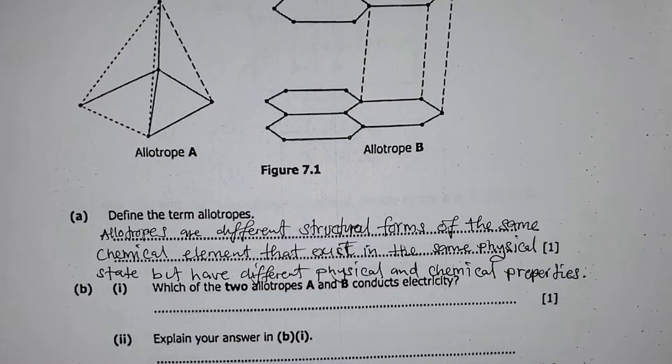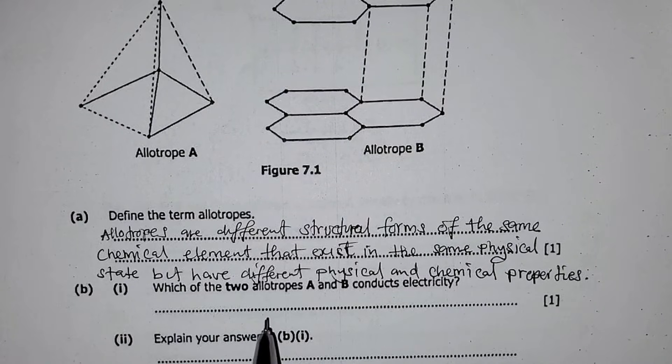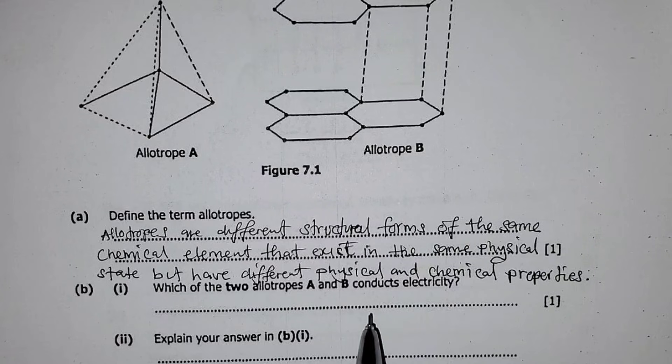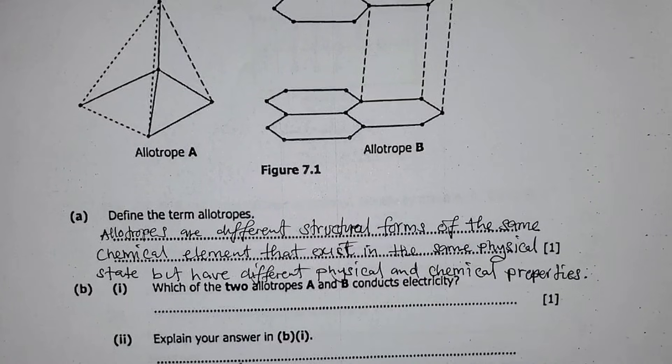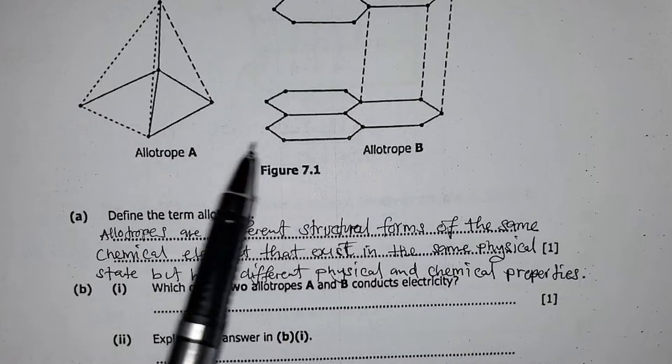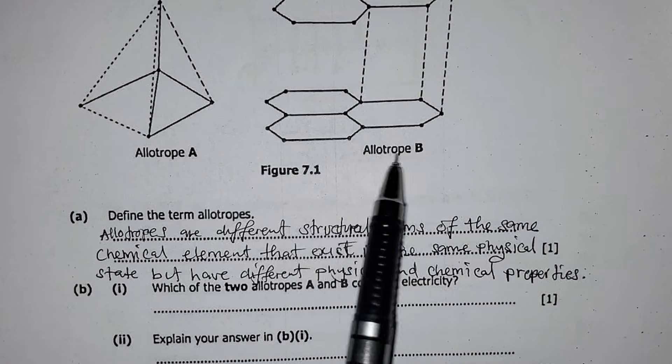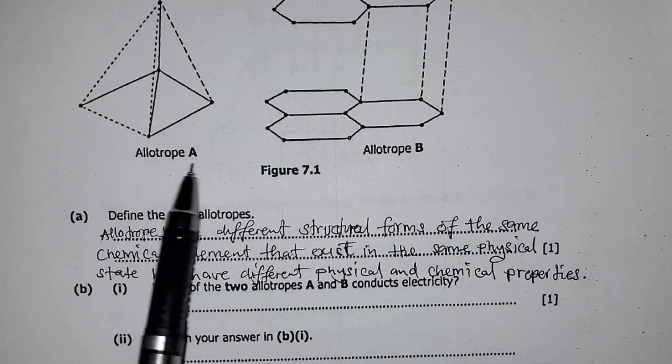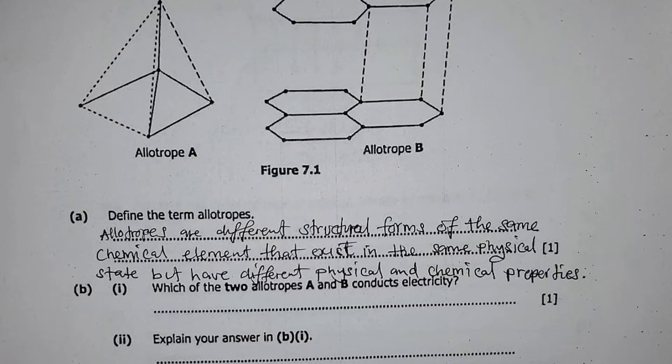Okay, question B1: which of the two allotropes A and B conducts electricity? Okay, so between A and B, it is this allotrope, allotrope B, which is graphite. Okay, this is diamond here, so you can just write in